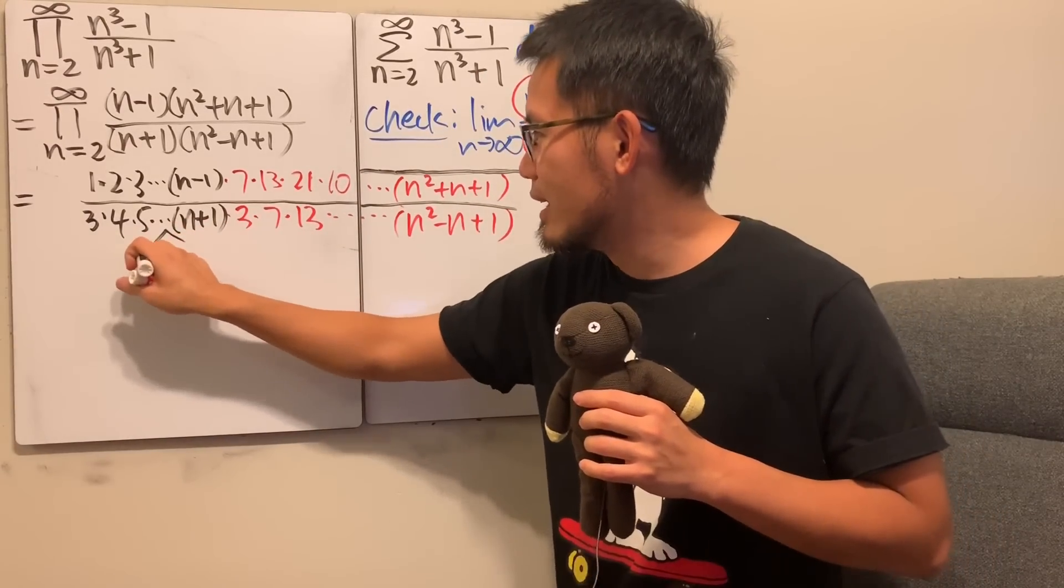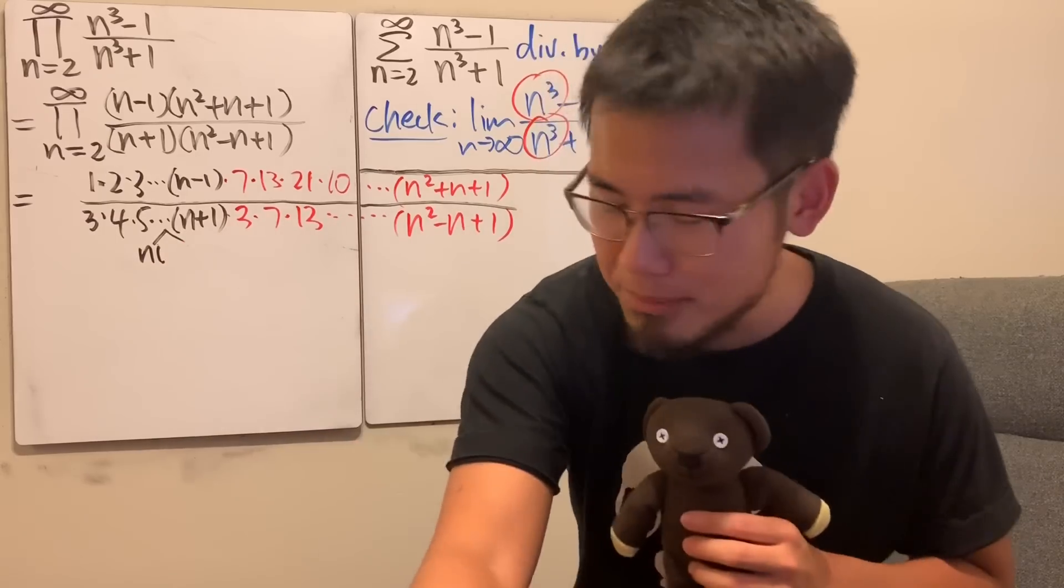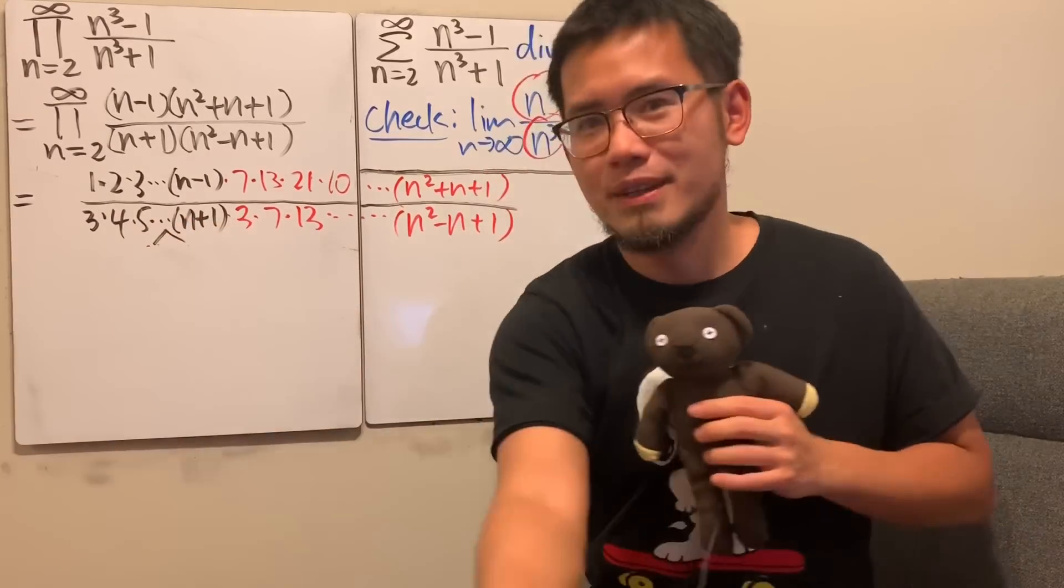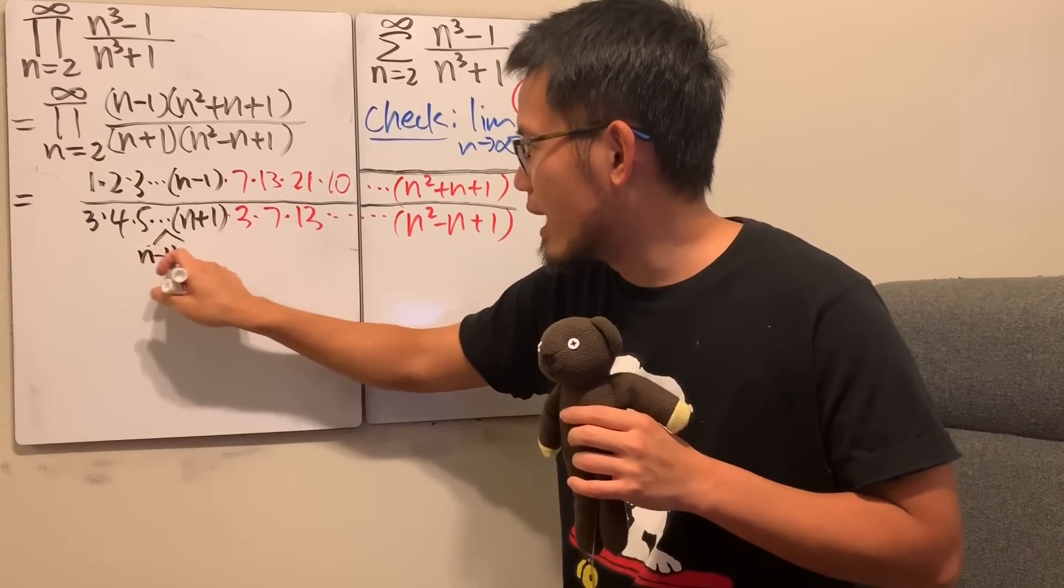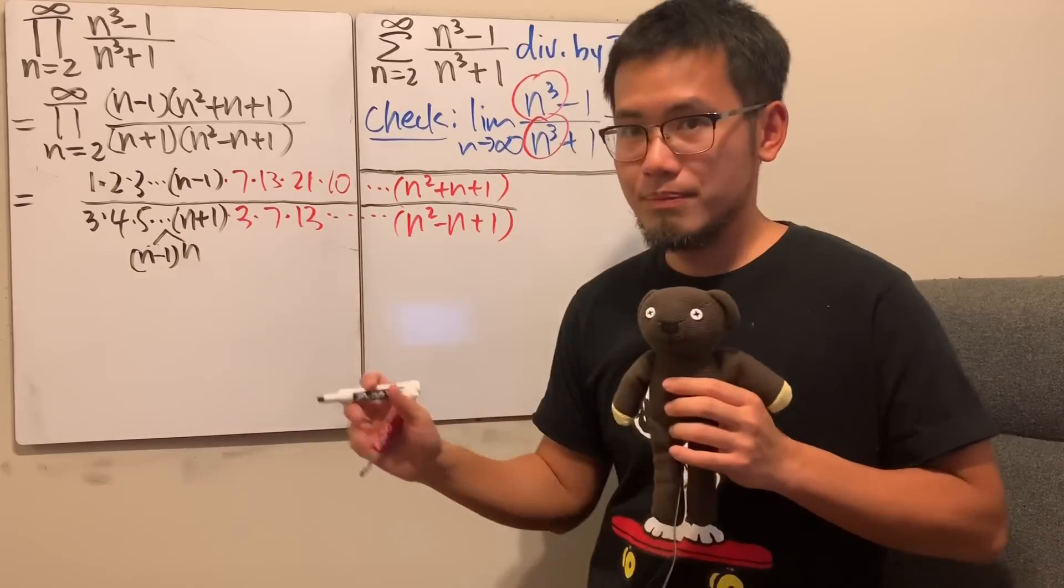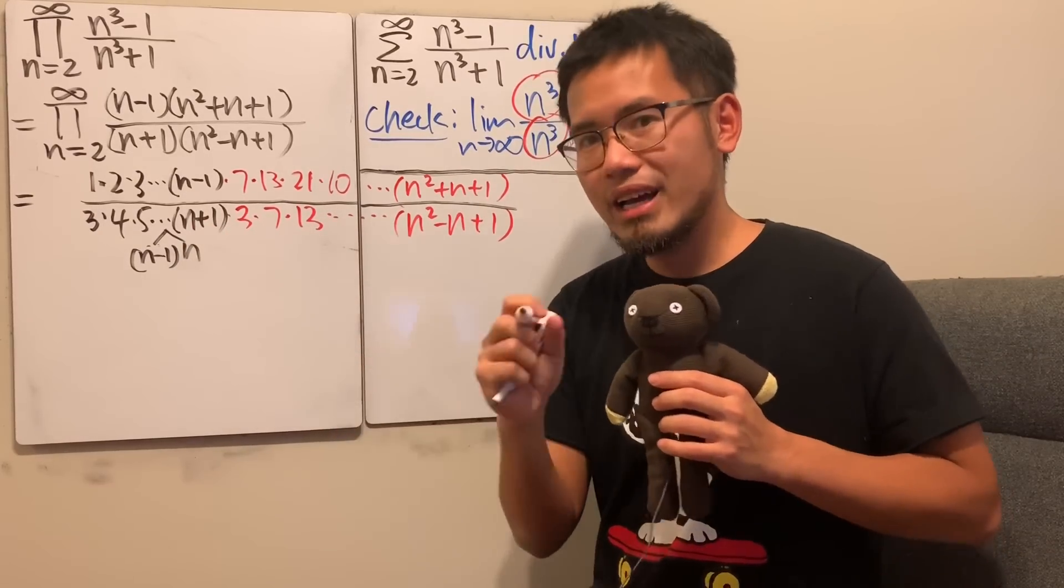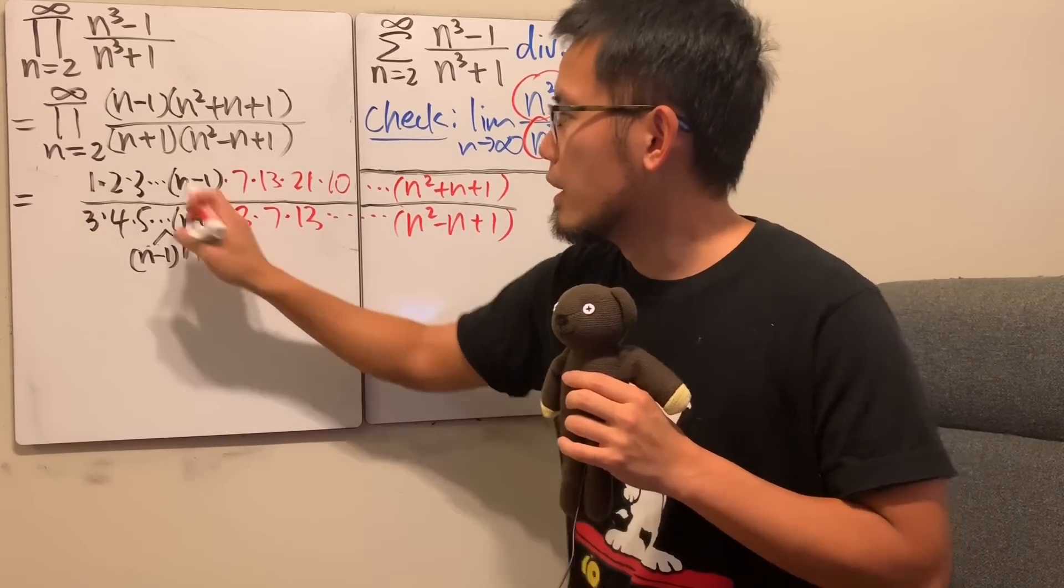Here, we have n minus 1 and n right here, right? So, I will just put that down, and n minus 1 and n. Let me do it again. Right here, n minus 1 and n, before the n plus 1, of course. And you see, here,